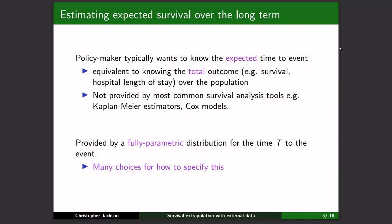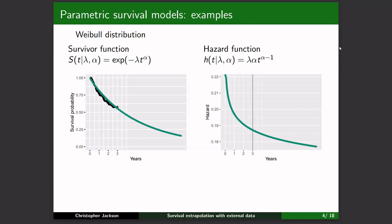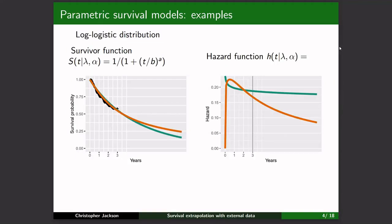This is all about fully parametric models. There are many choices for how to specify them. Here's a simple example: a Weibull distribution. On the left, we have the survivor function extrapolated from the example data set; on the right, the hazard function — a useful way of illustrating extrapolations representing how the risk of death changes over time. In this example the risk is decreasing. Here's an alternative, the log-logistic, which follows a different curve and gives a different extrapolation.